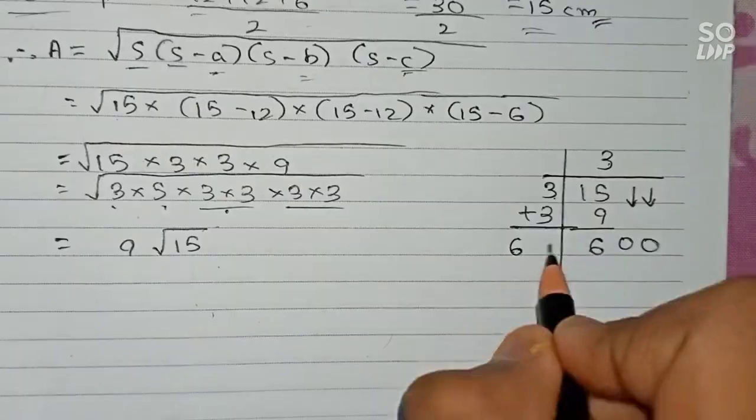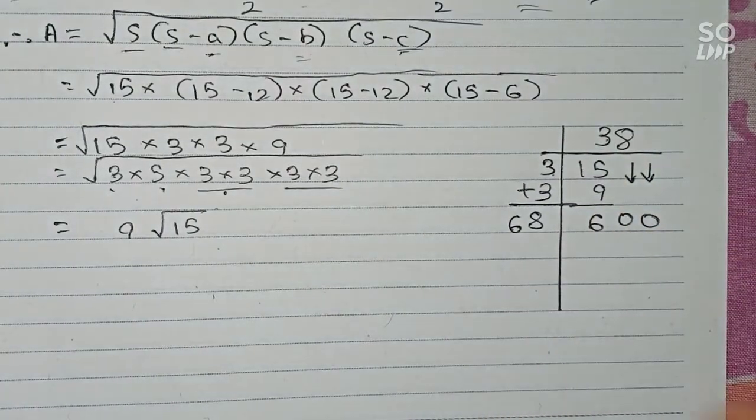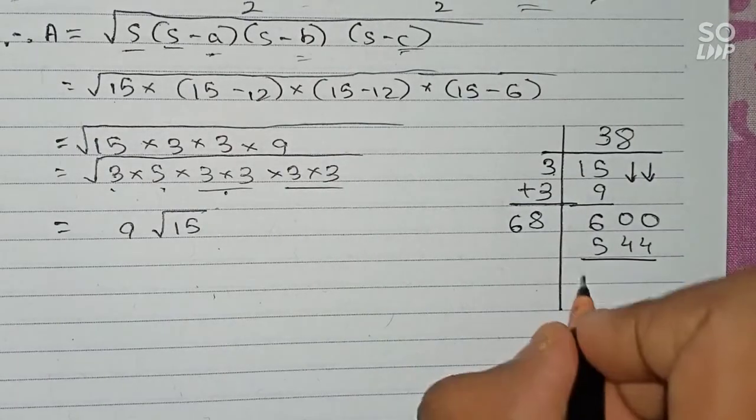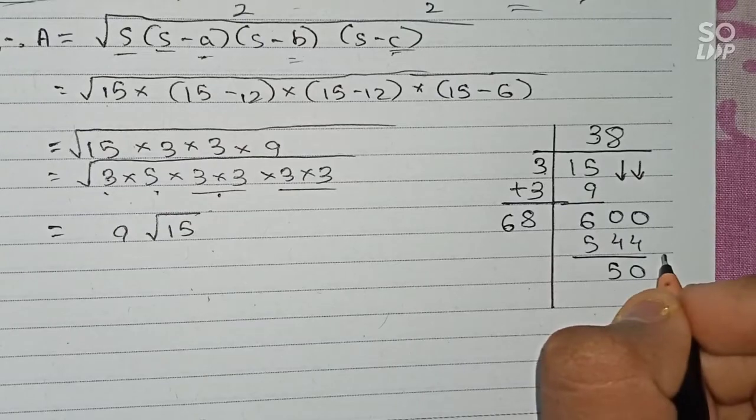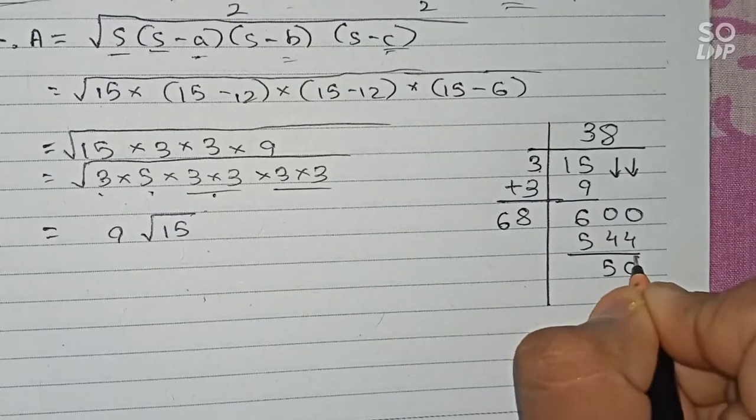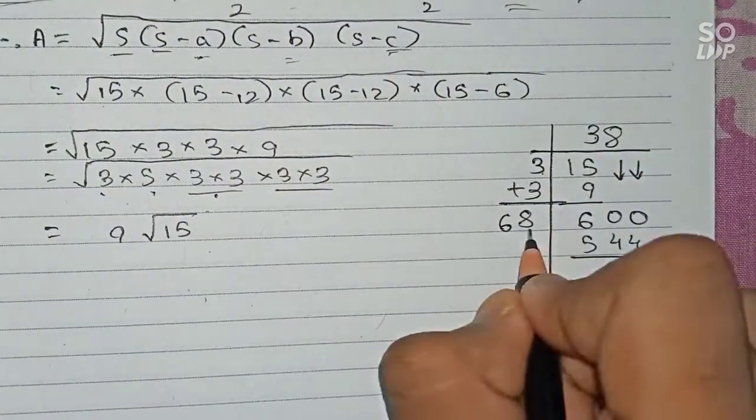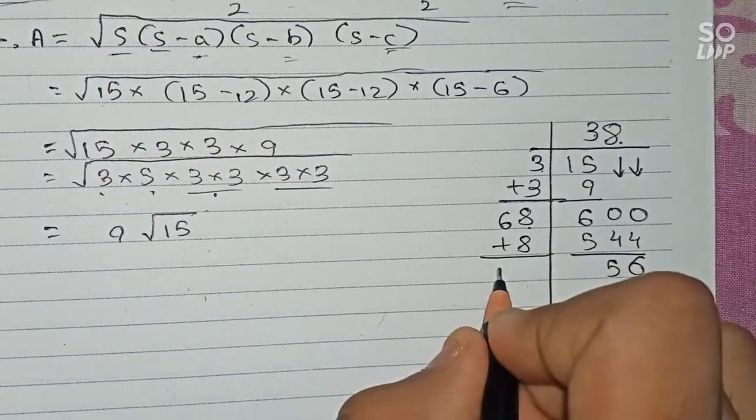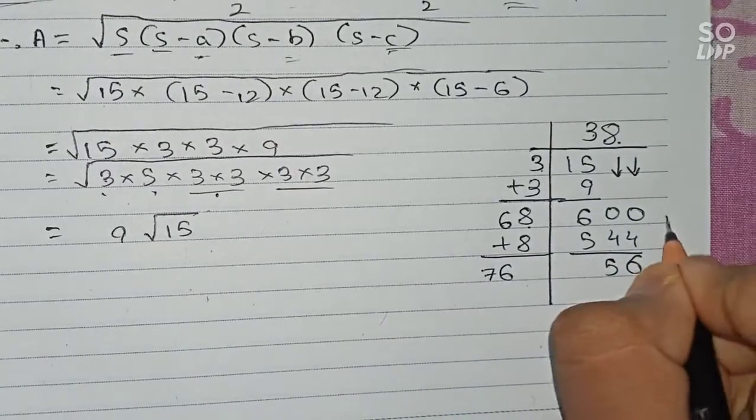So now 68. 8 will go... 8 times 8 is 64. The remainder is... sorry, 56 here, remainder is 56. So again 68 plus 8, that equals 76. Again two zeros come down.